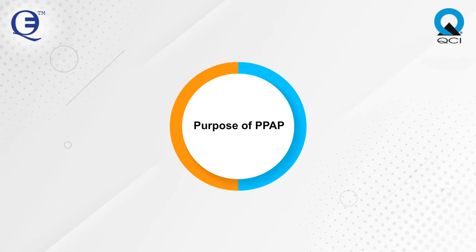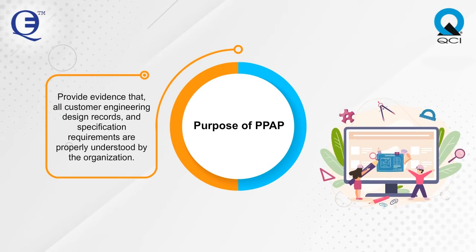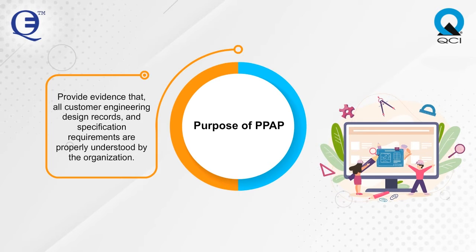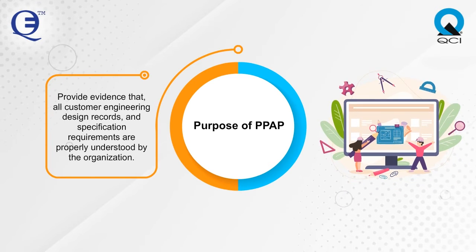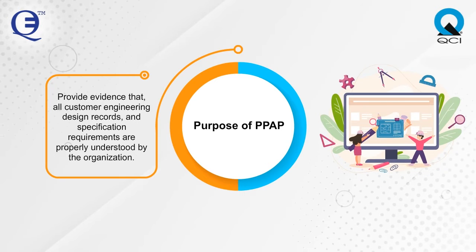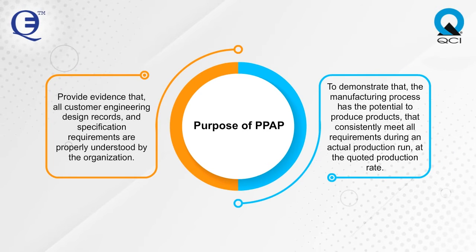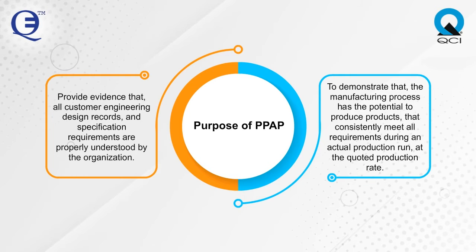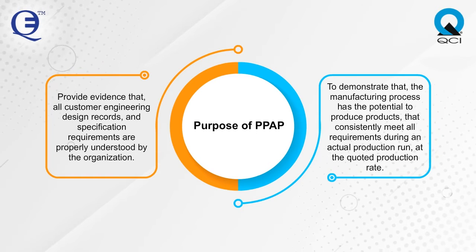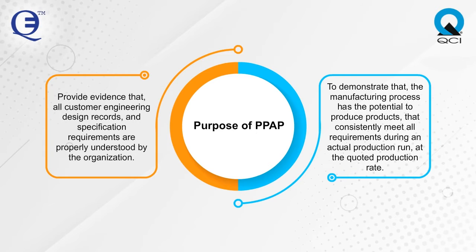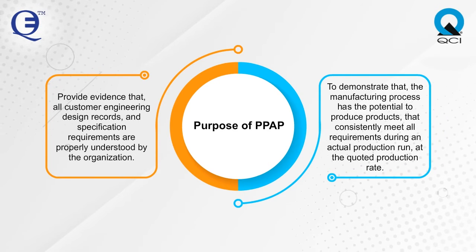Purpose of PPAP: to provide evidence that all customer engineering design records and specification requirements are properly understood by the organization, and to demonstrate that the manufacturing process has the potential to produce products that consistently meet all requirements during an actual production run at the quoted production rate.